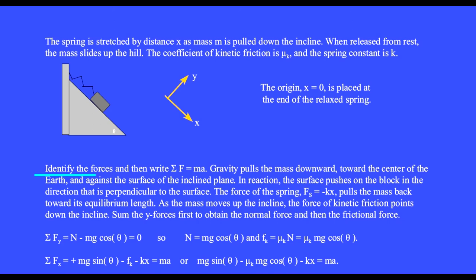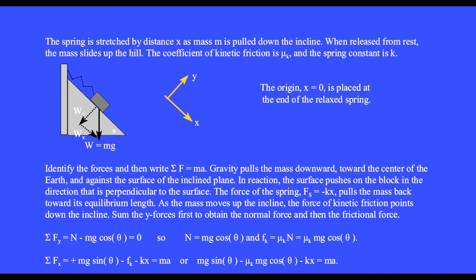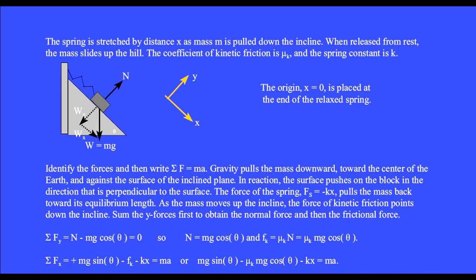Identify the forces and then write the sum of the forces equals mass times acceleration. Gravity pulls the mass downward toward the center of the earth and against the surface of the incline plane. In reaction, the surface pushes on the block in the direction that is perpendicular to the surface.